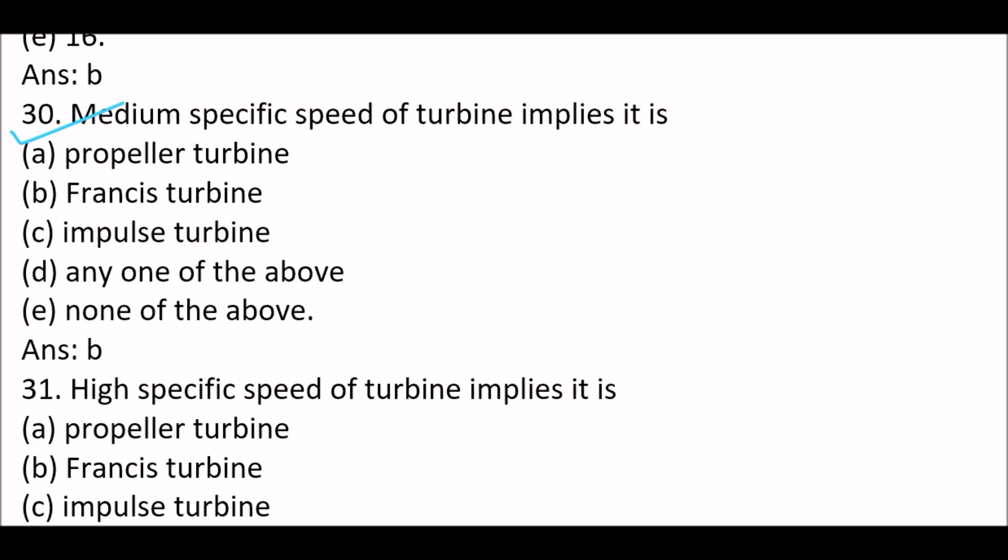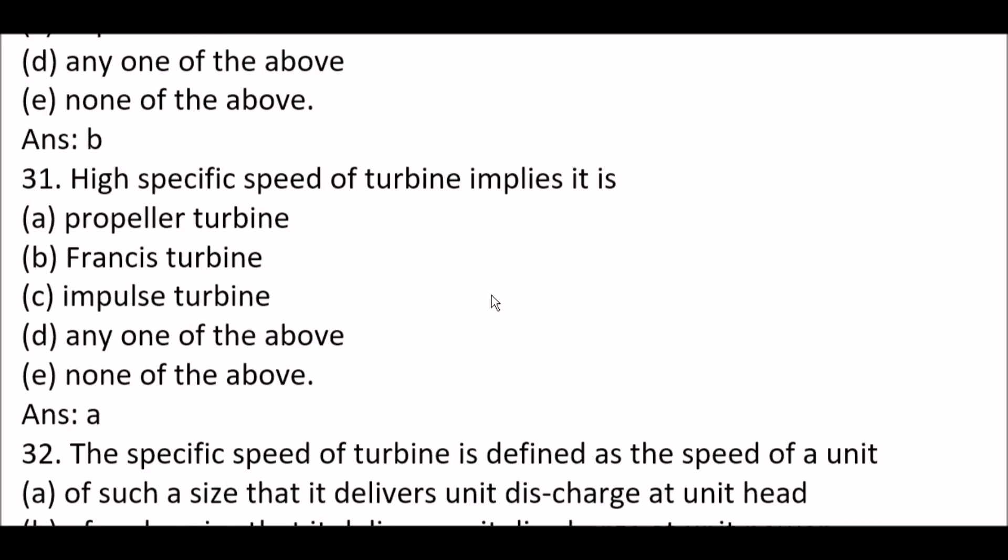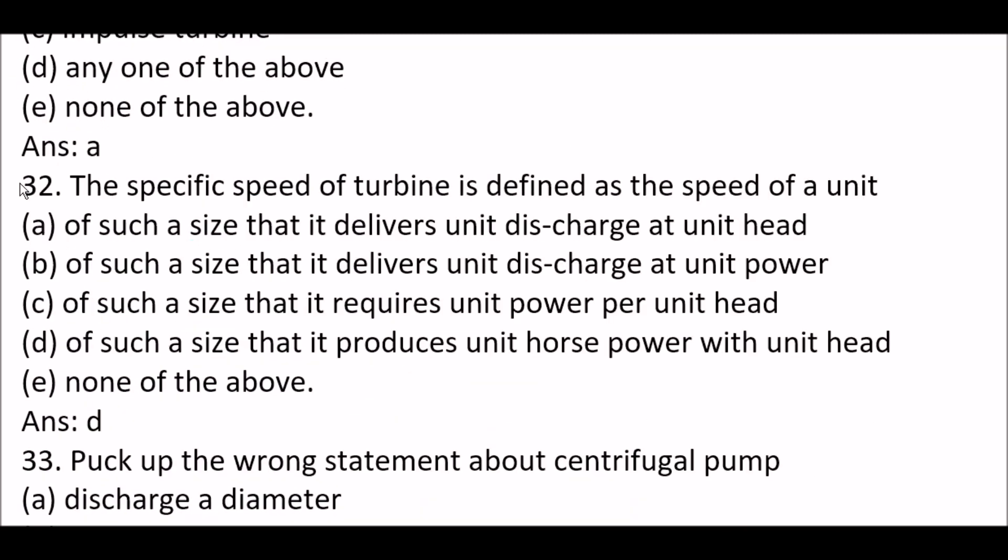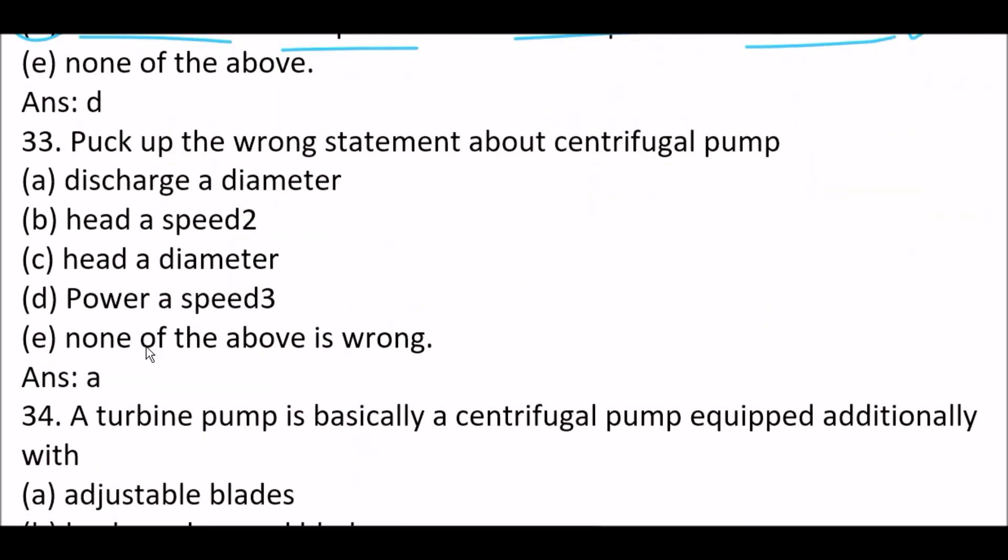Next question. High specific speed of turbine implies its option A, propeller turbine. The specific speed of turbine is defined as the speed of a unit, option D, of such a size that it produces unit horsepower with unit head. So right answer is option D.